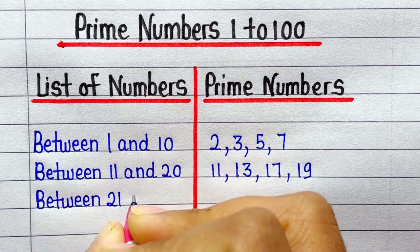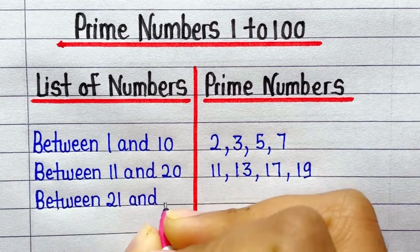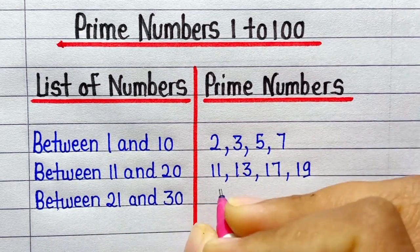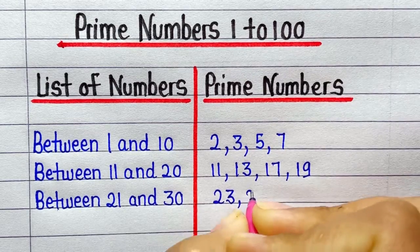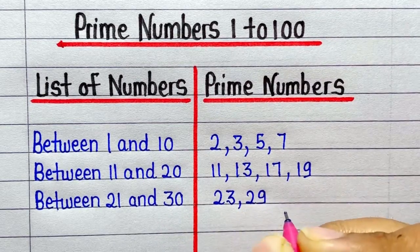Next is prime numbers between 21 and 30: 23 and 29.